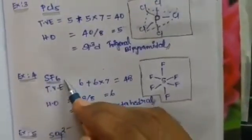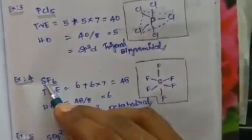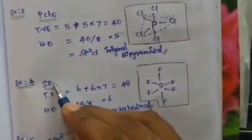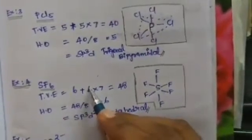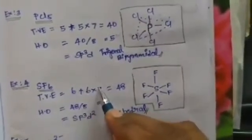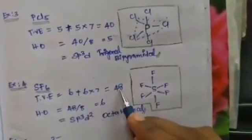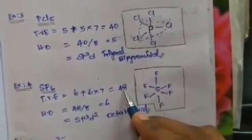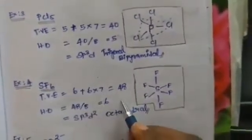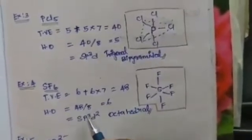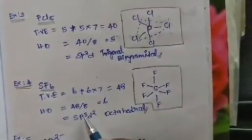Example 4: sulfur hexafluoride (SF₆). Sulfur is the central atom with 6 valence electrons. There are 6 surrounding fluorine atoms, each with 7 valence electrons. The total valence electrons equal 48. Since 48 is greater than 8, we divide by 8, giving 6 hybrid orbitals. Therefore hybridization is sp3d2 and geometry is octahedral.